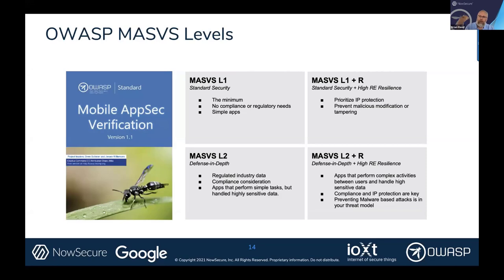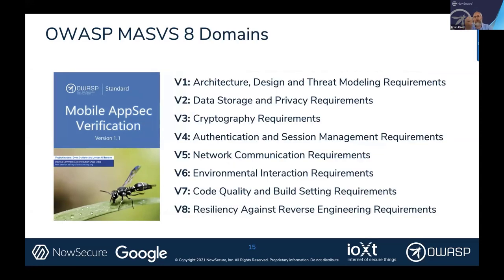L2+R is for complex activities with sensitive data where IP protection is critical — think your classic banking app, or an app that drives industrial machinery or manages an airplane. Working through the MASVS levels, we said we need a leveling system and need to think about resiliency. MASVS also has eight domains: architecture and threat modeling, data storage, cryptography, authentication and session management, network layer, environmental interactions, code quality, and the resiliency plus-R component. Data storage and network communications are a train wreck in mobile, and we needed to think about that for IoT and VPN.